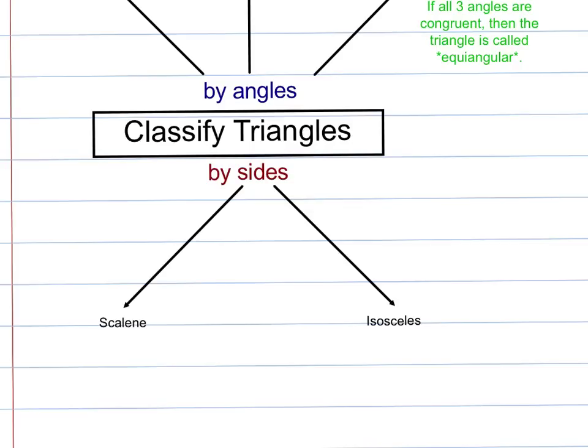Next, we'll talk about classifying triangles by their sides. There are two main types: scalene and isosceles triangles. In a scalene triangle, none of the sides are congruent.